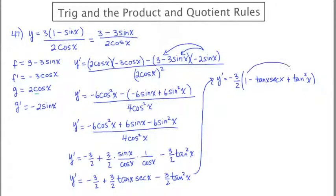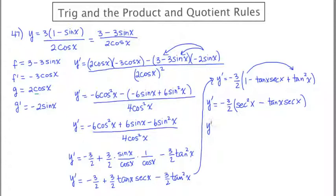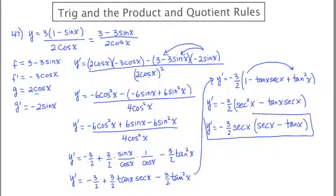Now 1 plus tan squared x is an identity equal to secant squared x. So we now have secant squared x minus tan x secant x. I can factor out a secant x, leaving negative 3 halves secant x times the quantity secant x minus tan x. That was absolutely a long problem — you have to have a lot of patience to keep the process slow so you don't make careless errors.